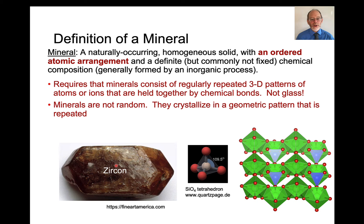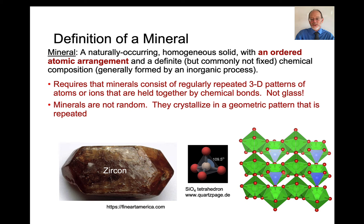A mineral has to have an ordered atomic arrangement. This is very important. Minerals consist of regularly repeated three-dimensional patterns of atoms or ions that are held together by chemical bonds. The structure of minerals is not random — they crystallize in a geometric pattern, and that geometric pattern is repeated. This excludes glass, which doesn't have a repeated three-dimensional pattern of atoms or ions. Here's the crystal zircon as an example. Zircon is a mineral consisting of silica tetrahedra. The red dots here are oxygens, and the zirconium sit in large green sites in a regular arrangement of atoms.